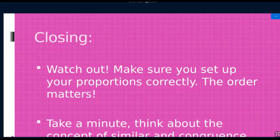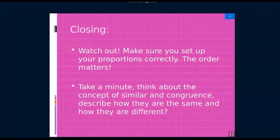Just make sure you watch out that your proportions are set up correctly - the order matters. Take a minute and think about the concept of similar and congruence. Describe how they are the same and how they are different. Similar means that their shapes are the same. Congruent means they are identical. We are similar in terms of people - all people have similar features like hands, feet, shoulders, legs, etc. But we are not congruent because we all have different body types. You can compare the two words even just in English.